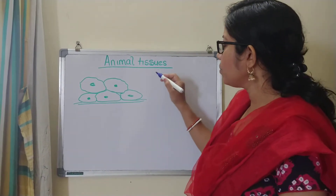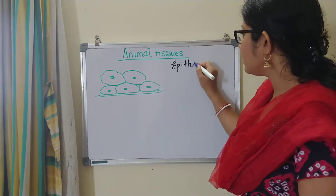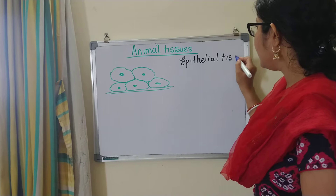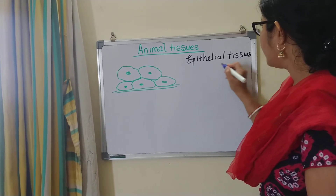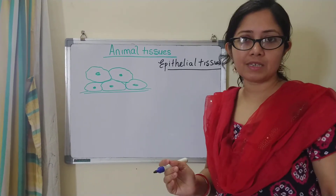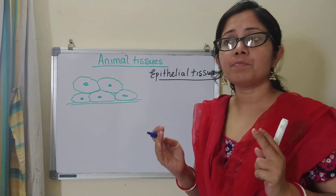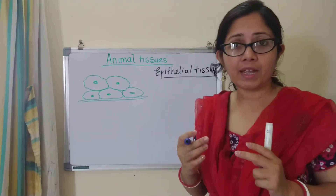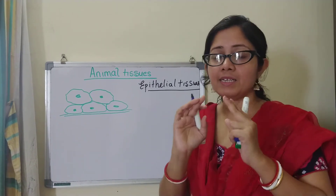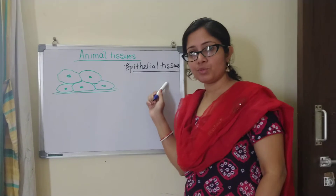Today we are going to do epithelial tissues, which basically lines the skin or the outer surface of the skin. For any organ you take — like for example, heart, then lungs — the inner lining of that organ is formed of epithelial tissues.